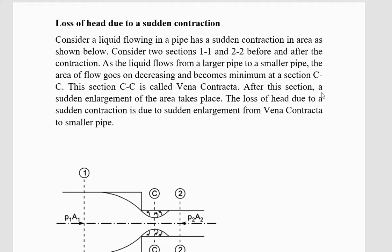This section C-C is called vena contracta. After this section, a sudden enlargement of the area takes place. The loss of head due to sudden contraction is actually due to sudden enlargement from vena contracta to the smaller pipe.